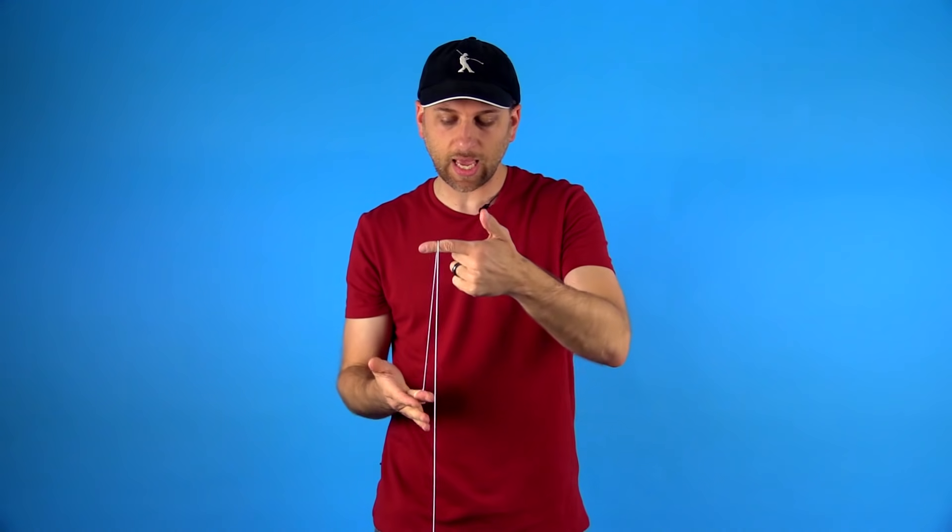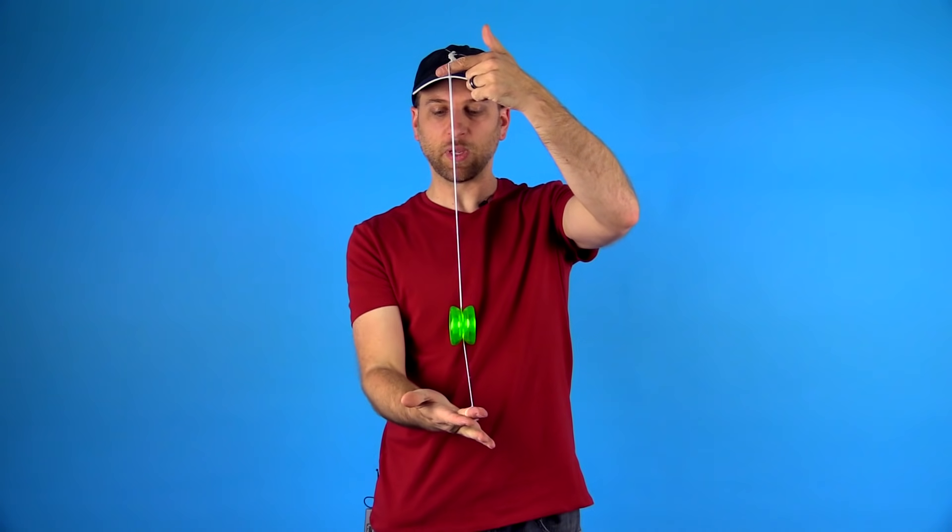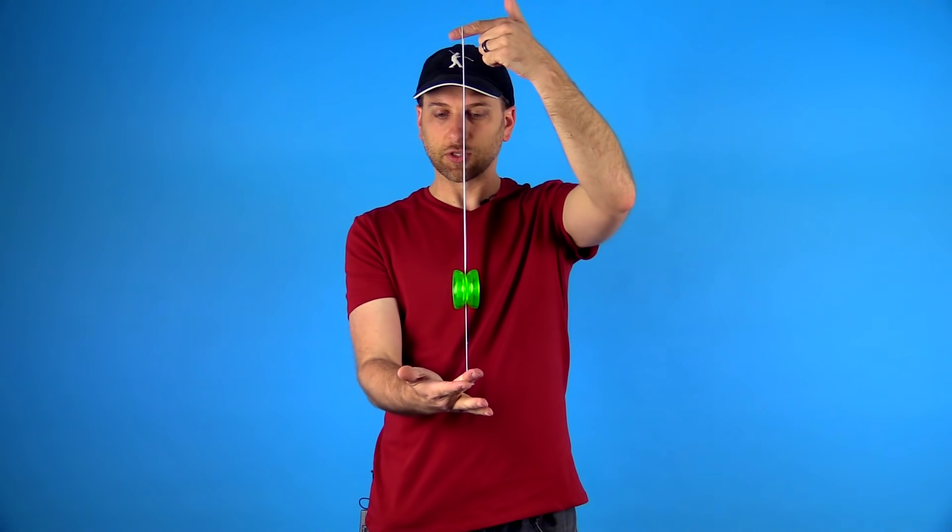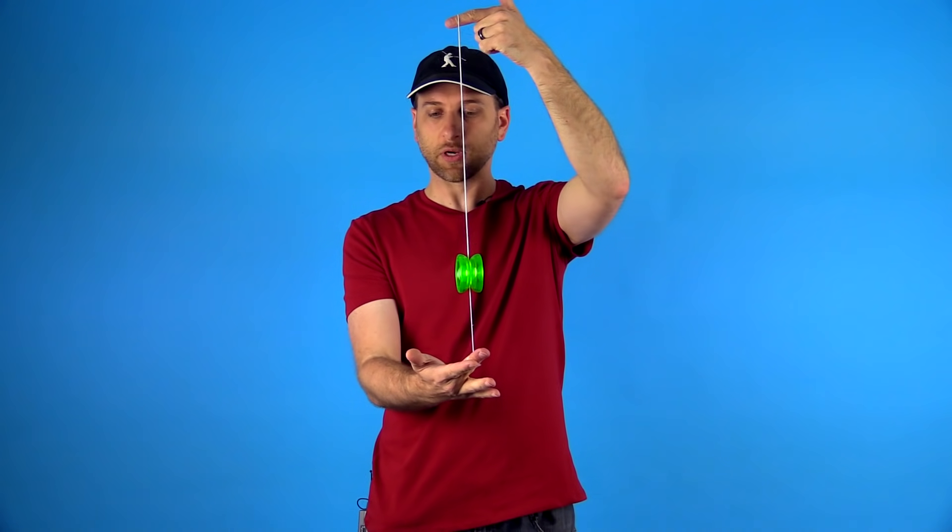Now when you start to do the trick that way, that might cause you some other problems. It might actually cause the yoyo to twist and turn a little bit, and it might even kill the spin. The reason that happens is because your hands are not straight up and down. As long as your hands are straight and the string is barely touching the side of the yoyo, it will just spin true.